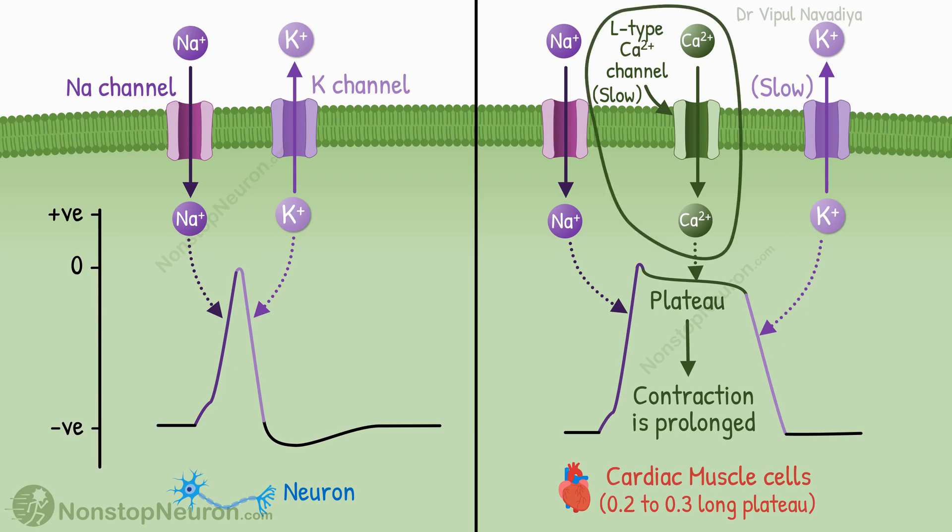In summary, the plateau is mainly produced by L-type calcium channels that close slowly. This allows the calcium entry for a longer time, producing a plateau in the action potential.